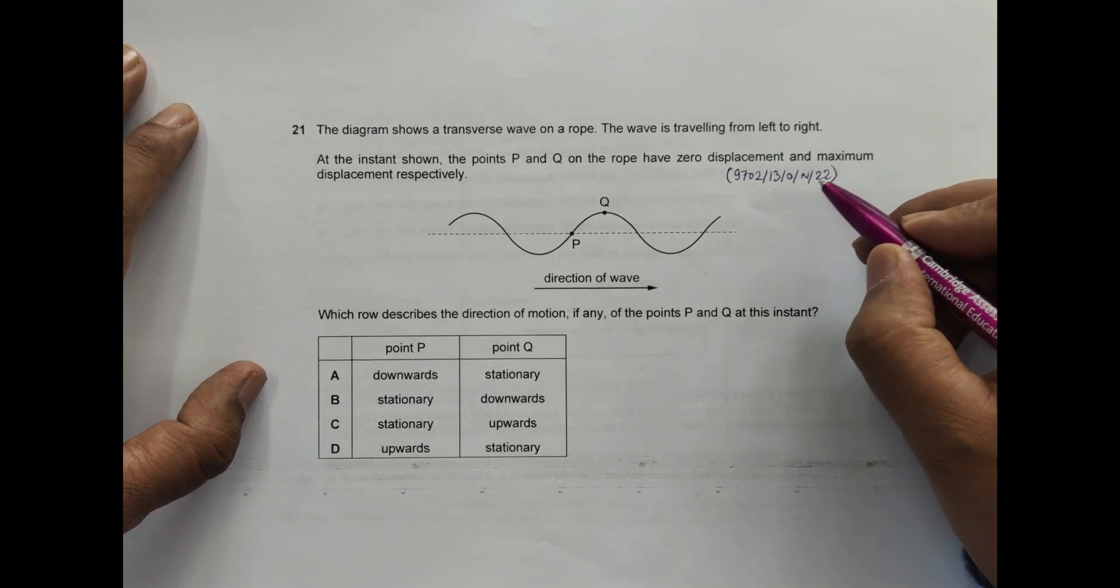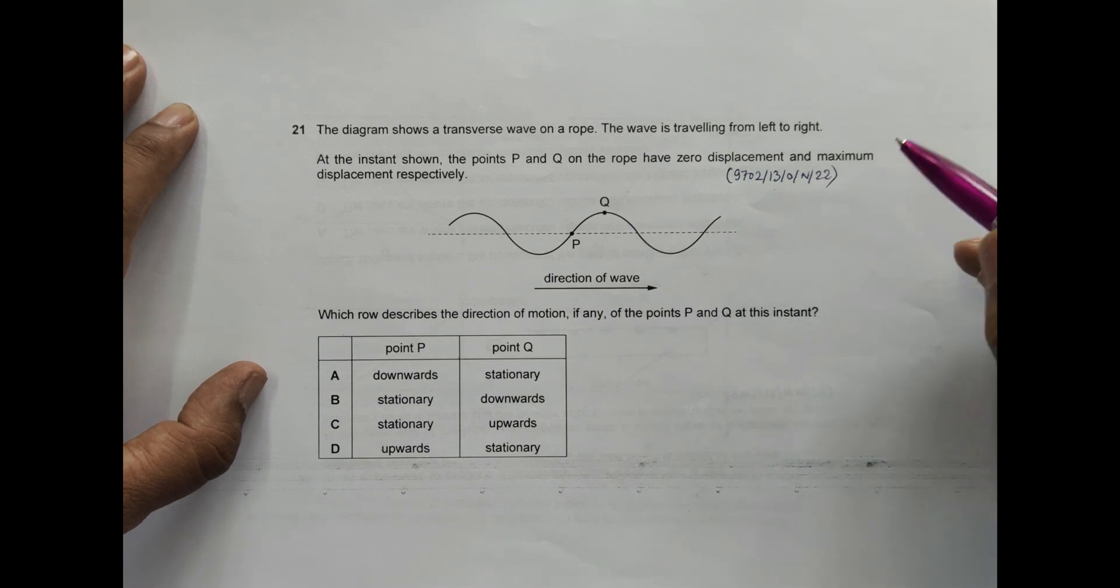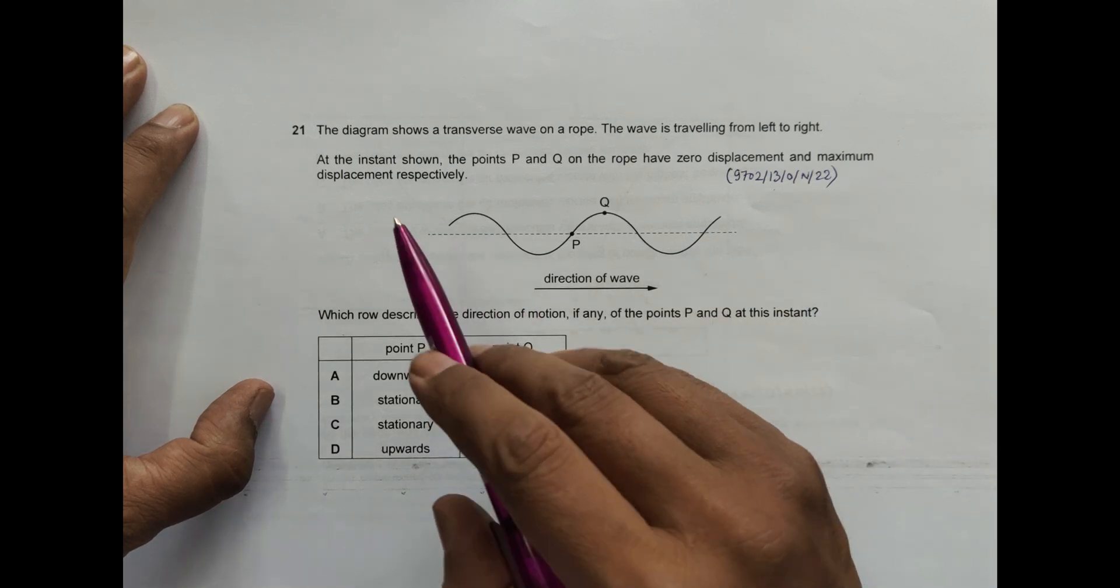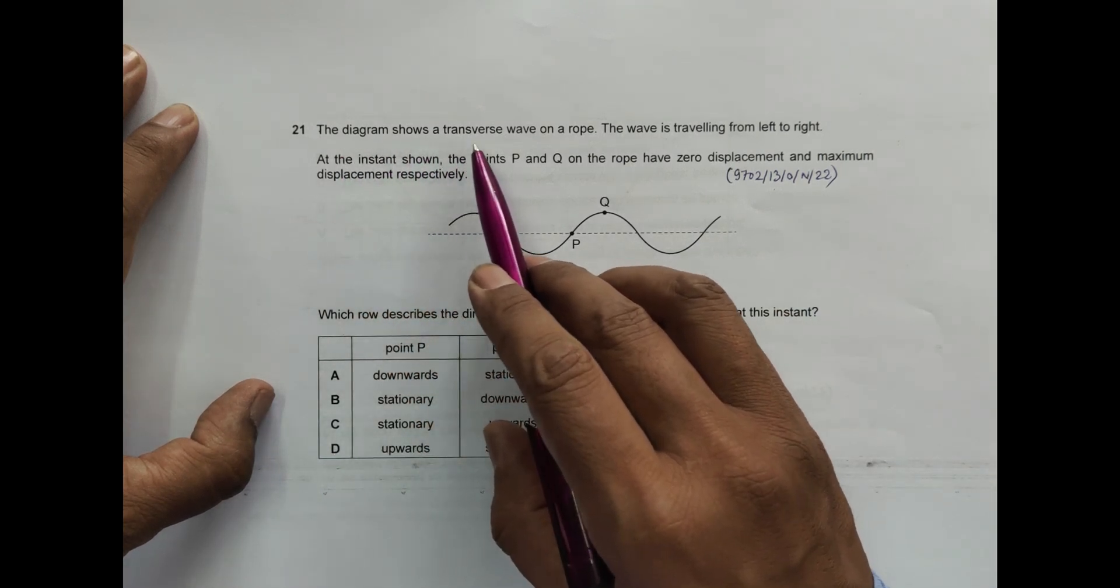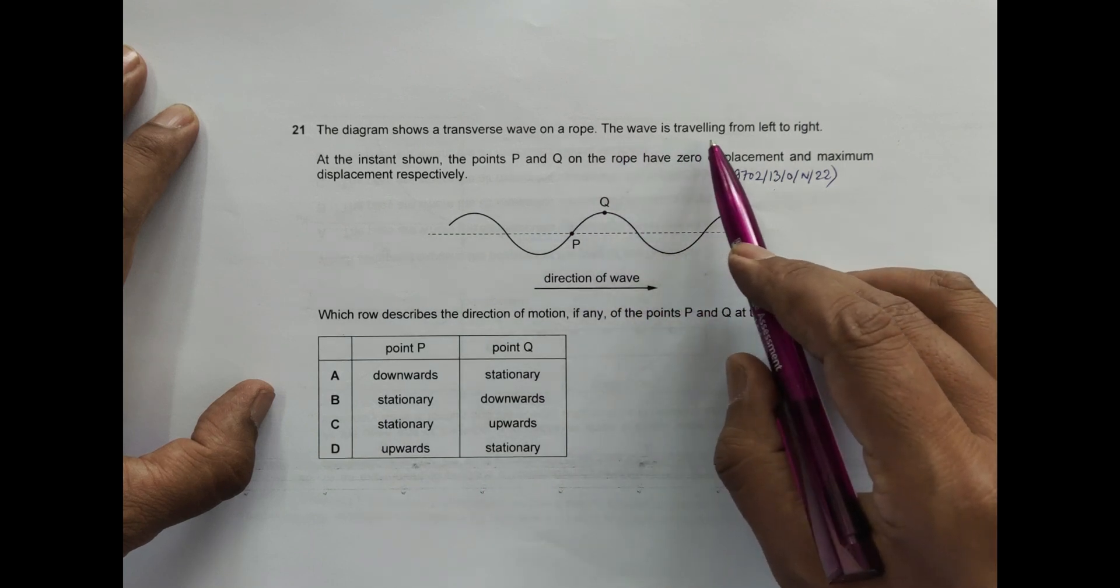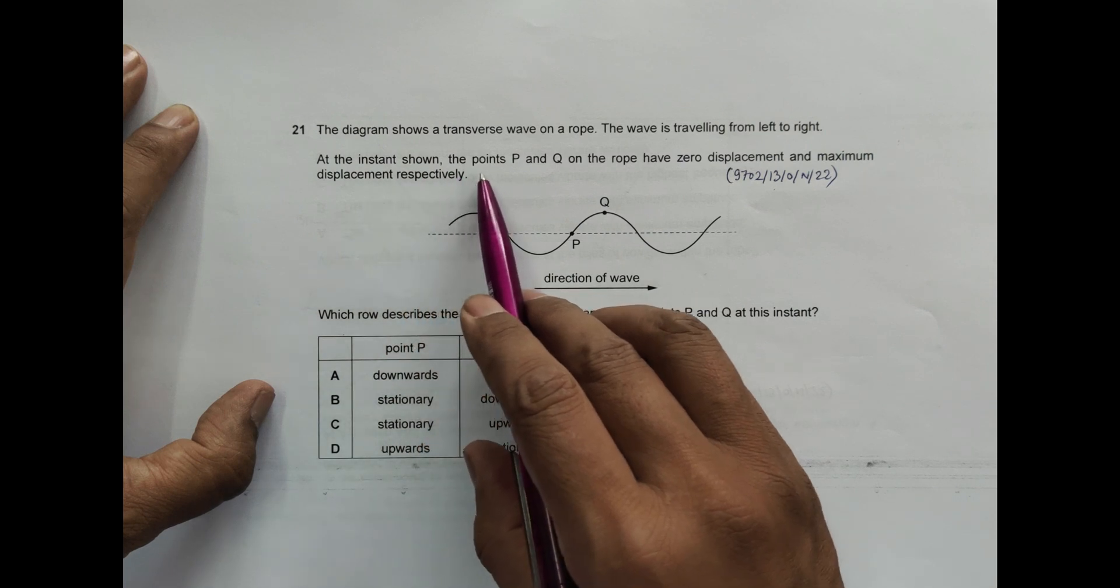Hello folks, this is 2022 October November paper 1-3, and the question number is 21. This question is concerned with the chapter on waves. It says that the diagram shows a transverse wave on a rope. The wave is traveling from left to right.